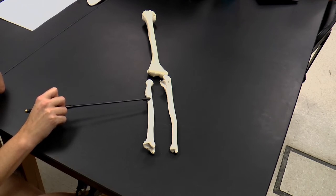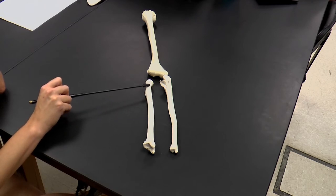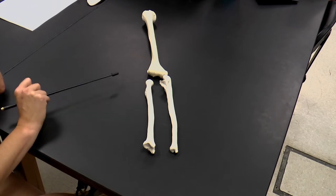So we always want to assume the anatomical position, which is where our thumbs are pointed away from our body. And so here we have the radius of our arm.